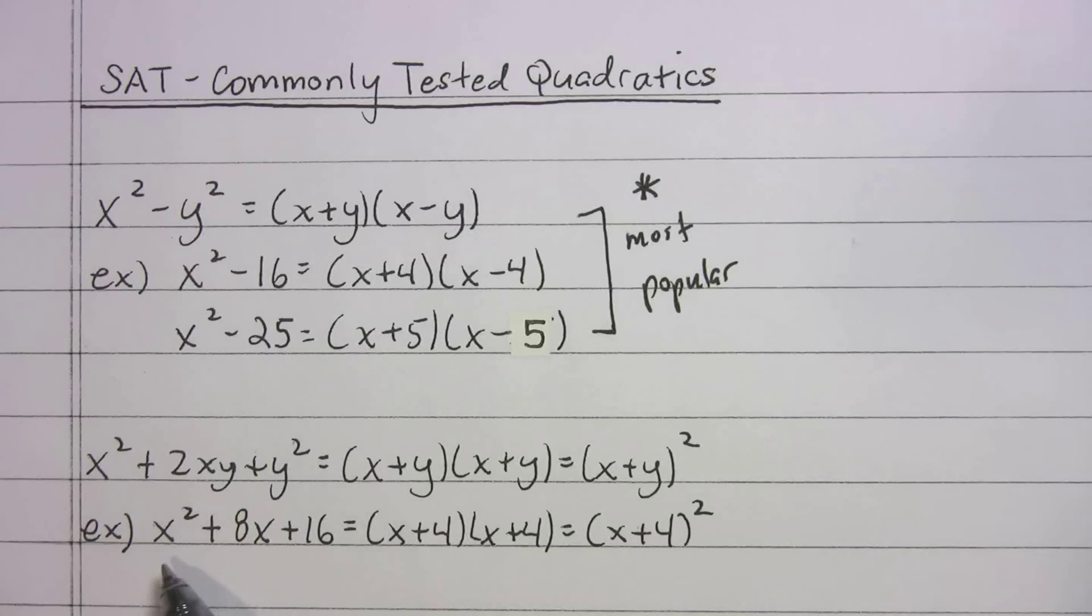An example, x squared plus 8x plus 16, that's equal to x plus 4 times x plus 4. And x plus 4 times x plus 4 is just x plus 4 squared. You want to get good at recognizing or being aware that these are all the same thing.